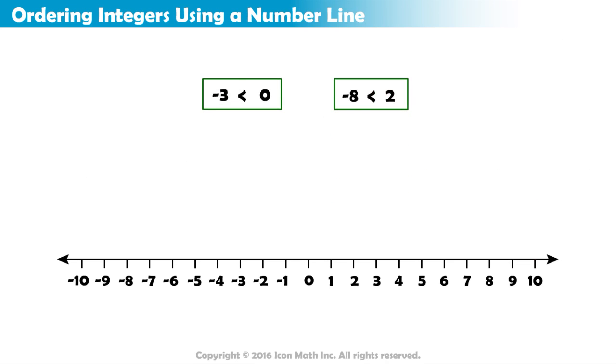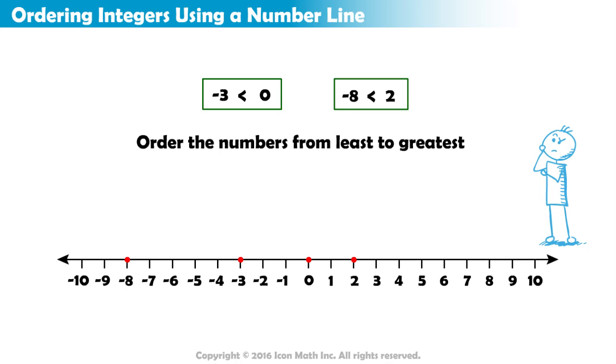Now, let's plot all of the numbers we compared on the number line. Negative 3, 0, negative 8, 2. Can you put them in order from least to greatest?